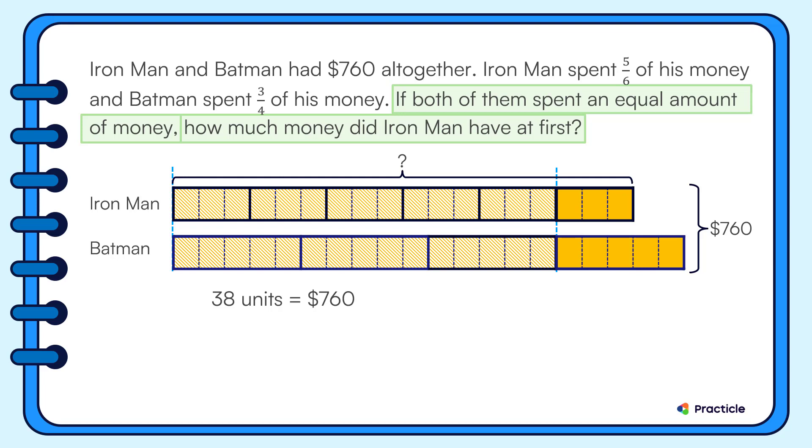Since we already know that thirty-eight smaller units represent a total of seven hundred and sixty dollars, we can find the value of one smaller unit by dividing seven hundred and sixty dollars by thirty-eight. This gives us twenty dollars.